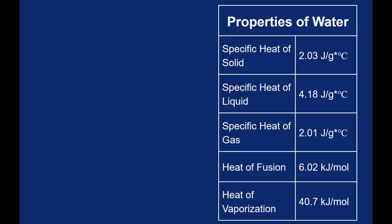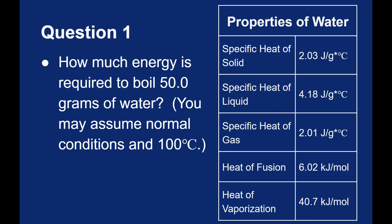Let's practice with these. Here are some values for water: the specific heats of the various phases of water, and the heat of fusion and heat of vaporization that we just saw. My first question is: how much energy is required to boil 50 grams of water? We can assume normal atmospheric conditions — one atmosphere — and we can assume that the water is already at 100 degrees Celsius. Note that you can affect the boiling point of water by changing the pressure: lowering pressure makes it easier to boil, raising pressure makes it harder. But here we assume one atmosphere.